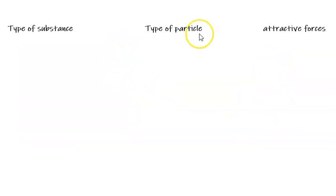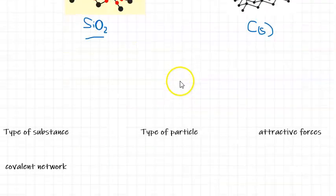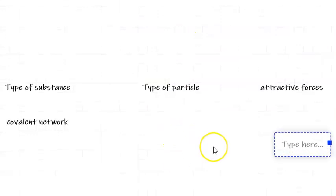A common question that we would need to answer with 3D covalent networks is the type of substance. If you've got silicon dioxide or diamond, then you have to say the type of substance is a covalent network. The type of particle of covalent networks, we describe the type of particle as being the atoms.